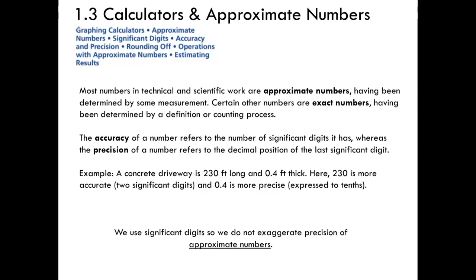As we consider working with these number systems, many times measurements are taken and the values given are approximate numbers, and with that we run across two terms to be familiar with. The first is accuracy, which refers to the number of significant digits a number has, whereas precision refers to the decimal position of the last significant digit. For example, a concrete driveway that is 230 feet long and 0.4 of a foot thick: 230 is more accurate because it has two significant digits, whereas 0.4 is more precise.